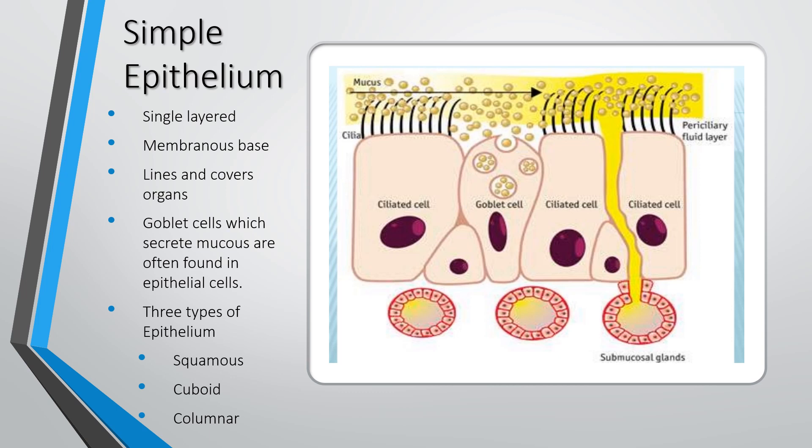Simple epithelium is only one layer thick, has no membrane, and it lines and covers all the organs of the body. It's very slippery and smooth, allowing the contents of the organs to slip and slide. Some of the epithelial cells are also called goblet cells. Inside a goblet cell you have mucus, and mucus is only found in simple epithelial cells. Mucus helps to keep things slippery.